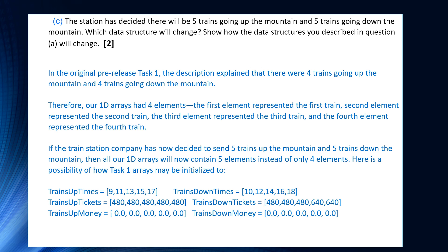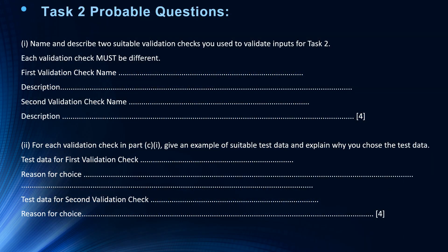Those were some examples for task 1 questions. For task 2, I have a feeling they're going to ask you to write task 2 in the pre-release, and they might also ask questions like: name and describe two suitable validation checks you use to validate your inputs for task 2. Each validation check must be different — write the name and description of each check, and for each, give an example of suitable test data and explain why you chose it.